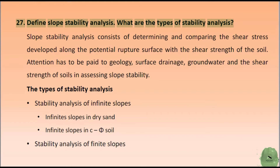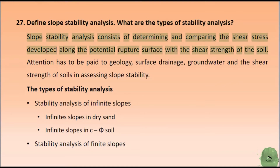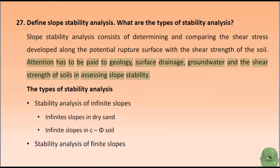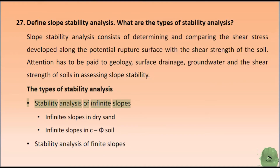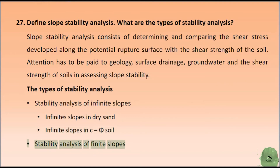Define slope stability analysis. What are the types of stability analysis? Slope stability analysis consists of determining and comparing the shear stress developed along the potential rupture surface with the shear strength of the soil. Attention has to be paid to geology, surface drainage, groundwater, and the shear strength of soils in assessing slope stability. Types of stability analysis: stability analysis of infinite slopes — infinite slopes in dry sand, infinite slopes in cohesive soil, and stability analysis of finite slopes.